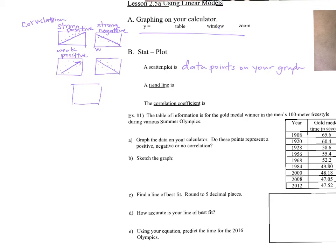The line I'm putting through all of these is called a trend line, and another word for it is the line of best fit. It's the best line you can draw through the mass of your data. You're going to draw a lot of lines of best fit — fortunately your calculator is usually going to do that for you.